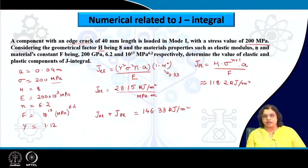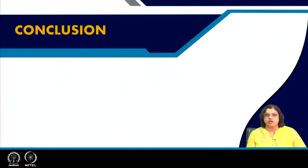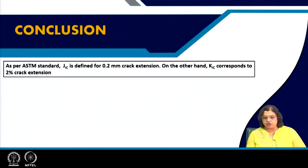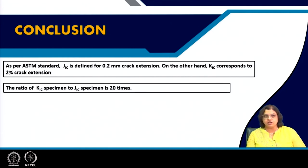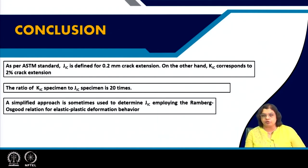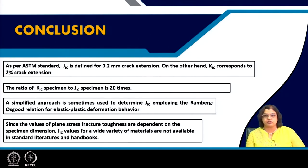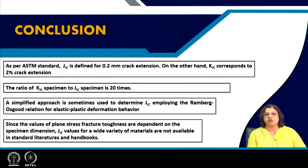That is how we can determine J integral or J1c values in a simplified way. With this we are at the end of plane stress fracture toughness testing. To conclude: J1c is defined for 0.2 millimeter crack extension; the ratio of K1c specimen to J1c specimen size is 20, making K1c specimens quite large; and a simplified approach using the Ramberg-Osgood relation has been shown. Since J1c values depend on specimen dimension, they are not widely available in standard literature — that is a drawback of J1c testing.